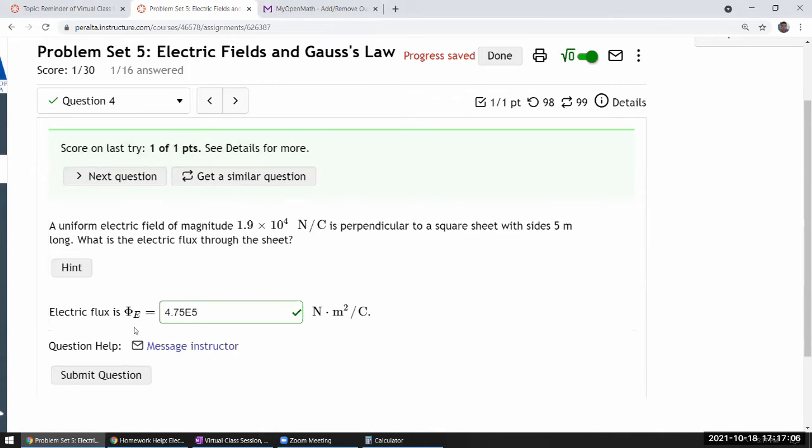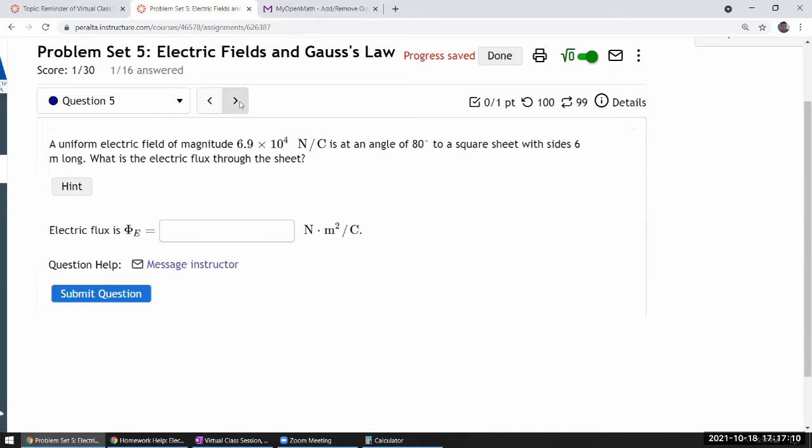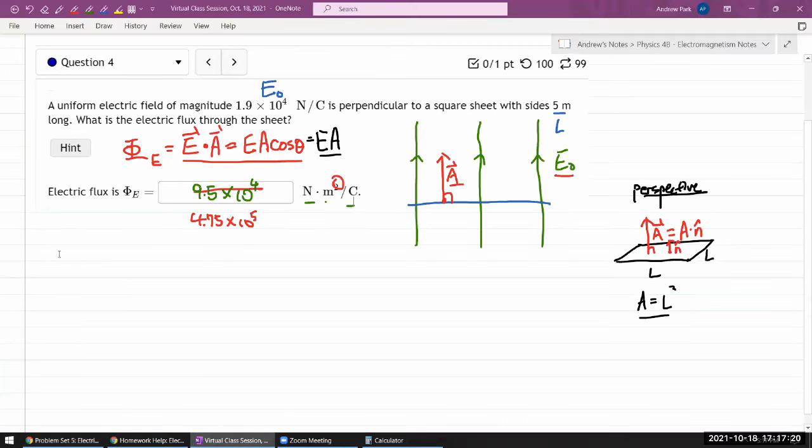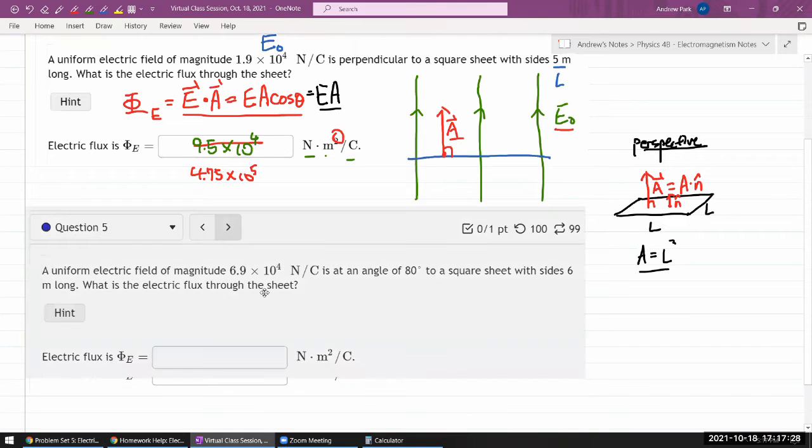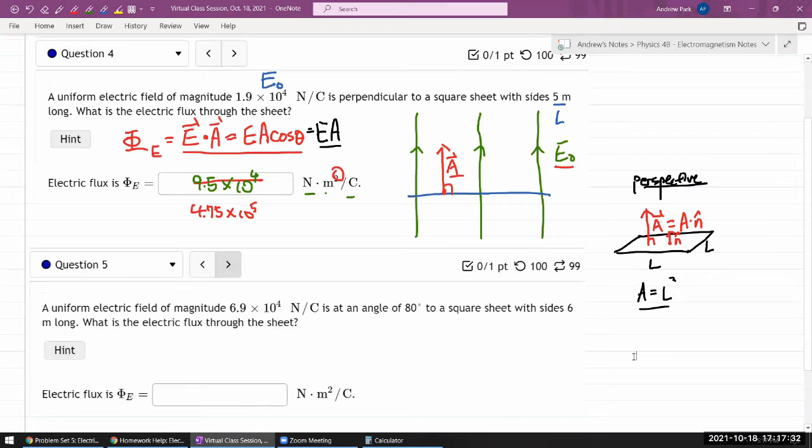And the next question is a very similar setup with a slight change. So, let me copy that over and answer it. Now, most of what we've written down for question 4 will still apply. So, let me just keep both the picture, both questions on one screen and finish question 5 by modifying what I have already marked for question 4. So, a lot of the setup is similar. The question gives uniform electric field of some magnitude. Oh, but this is new. It's at an angle of theta. I'll have to mark that on my drawing. To a square sheet of side, this time 6 meters. So, that plays the same role as 5 meters above.